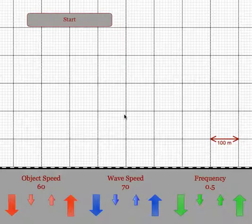This program is designed to have students study the relationships between frequency and wavelength when the object producing the waves is in motion. You have control over the speed of the object, the speed of the wave, and the frequency.